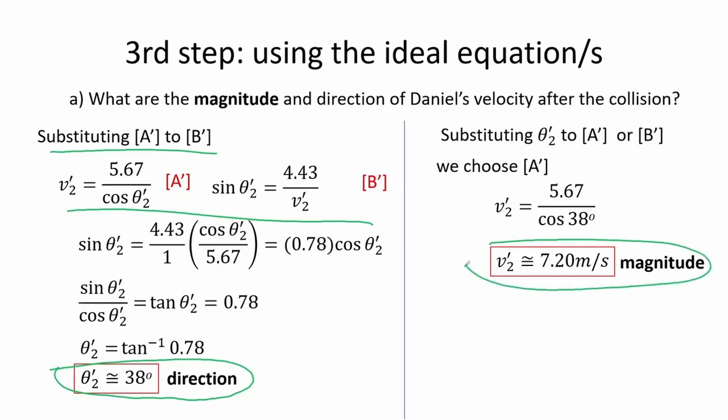Note that we can substitute theta' to equation B' also and obtain the same value of the magnitude of the velocity of the second mass.